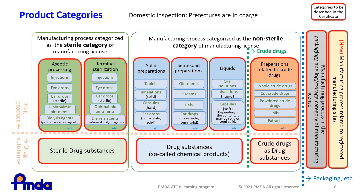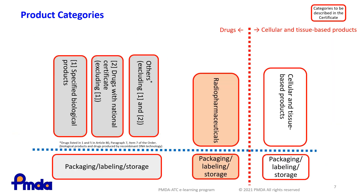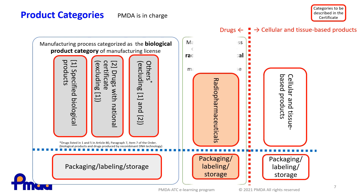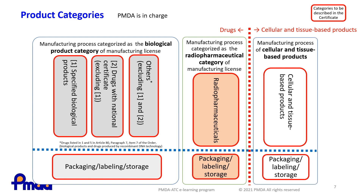The inspection authorities for the product category-based inspection are all prefectures if the applicable inspection target is domestic. For overseas manufacturing sites, PMDA is the inspection authority. Additionally, PMDA is the inspection authority regardless of whether the site is domestic or overseas for categories belonging to the minister-licensed category: four manufacturing process categories classified as biological product categories, two classified as radiopharmaceutical categories, and two classified as cellular and tissue-based products categories.